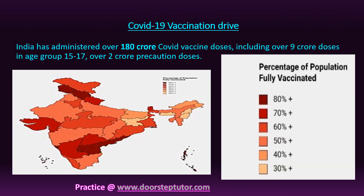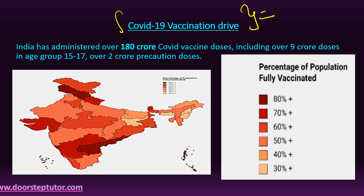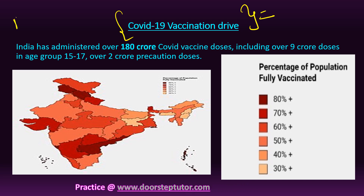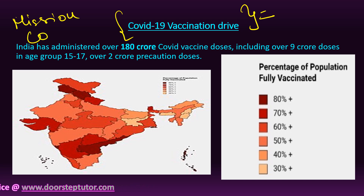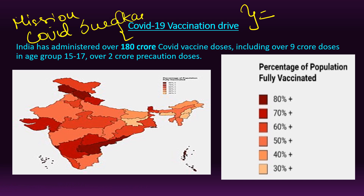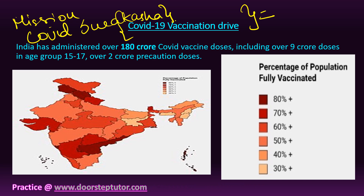Another important topic is the COVID-19 vaccination drive. India has administered over 180 crore COVID vaccine doses, including over 9 crore doses in the age group 15 to 17, and over 2 crore precaution doses. You can remember the objectives of Mission COVID Suraksha, which includes funding candidate vaccines with their testing, manufacturing, licensing, and distribution in the market, and establishing clinical trial sites and rendering existing laboratories.